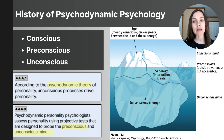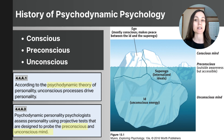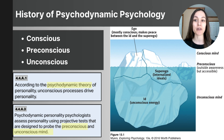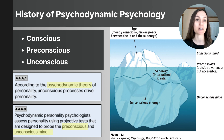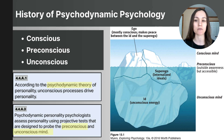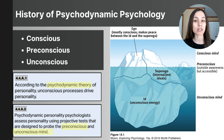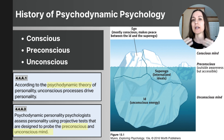Freud believed that the id, ego, and superego operated on different levels of conscious awareness. Many people illustrate this using an iceberg — what you see above the water looks like a large towering piece of ice, but below the surface the iceberg is actually much larger, and the part floating above is quite small in comparison to what is underneath. The conscious mind is the part we are aware of — our ideas, memories, and emotions that we can access freely. The pre-conscious is outside of our current awareness but could be retrieved with effort.